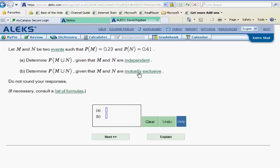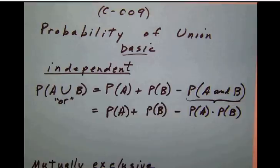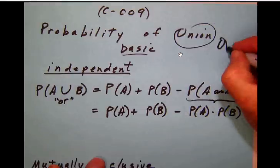Well, this is just another play off of the OR probability formula that we've done several times before. So let's go over and take a look at our notes. In the probability of union, or we might as well say OR here, that this is basically the OR probability type which we've done before.